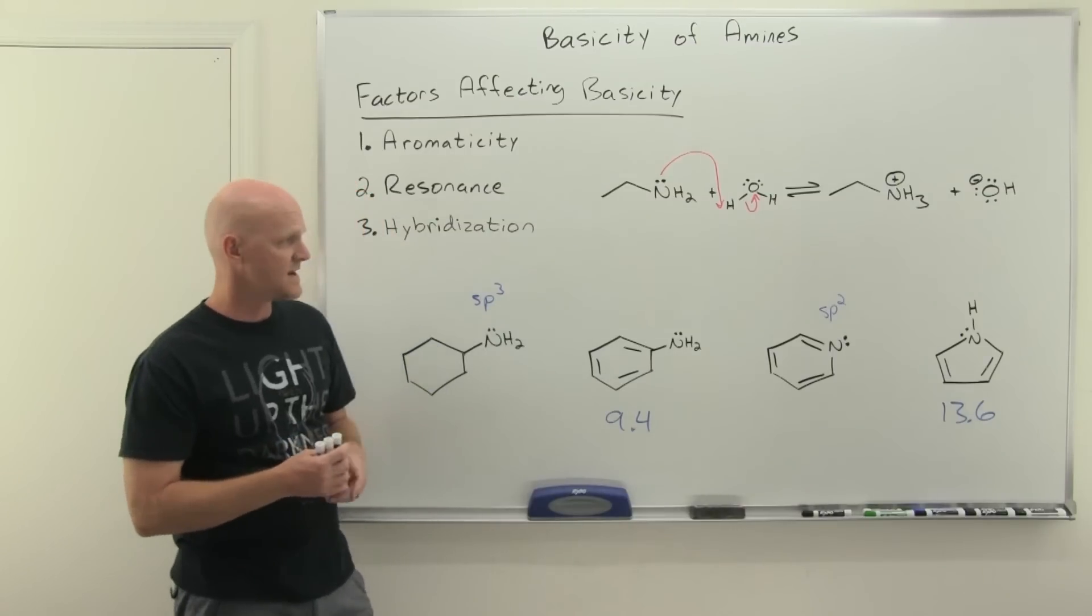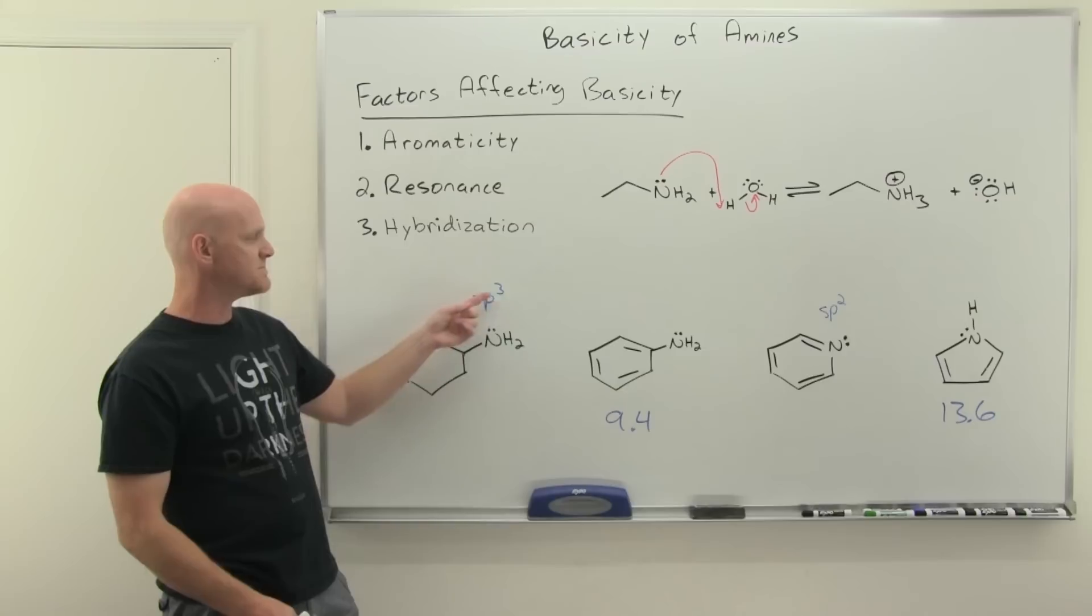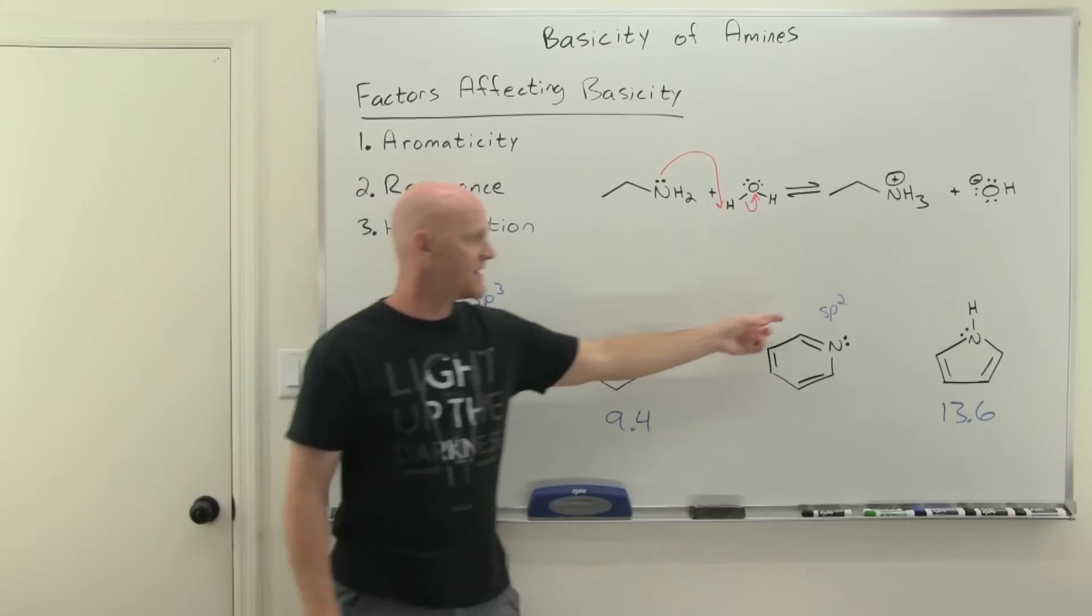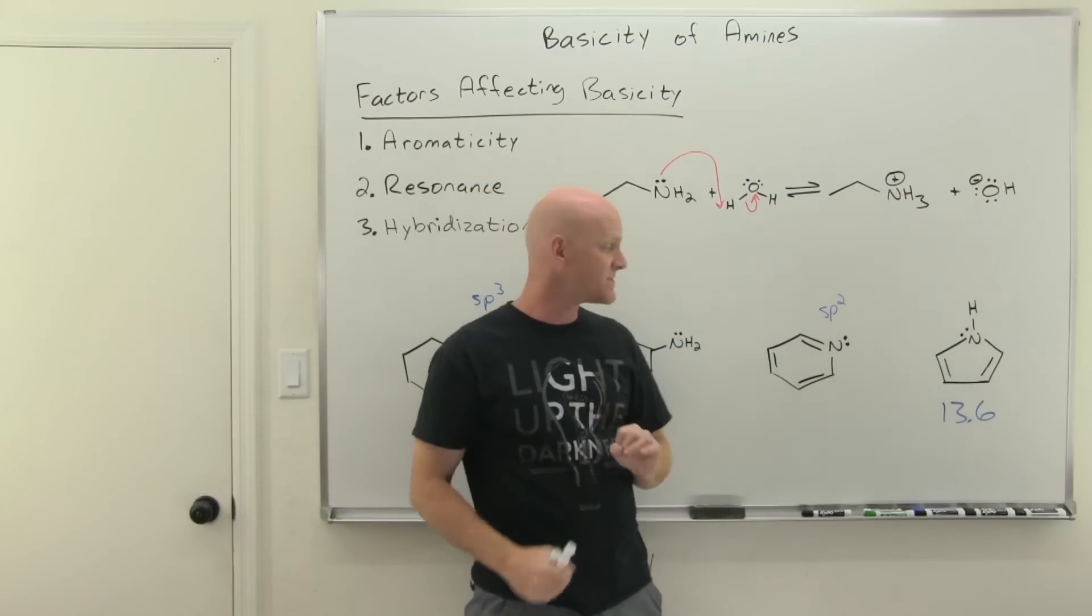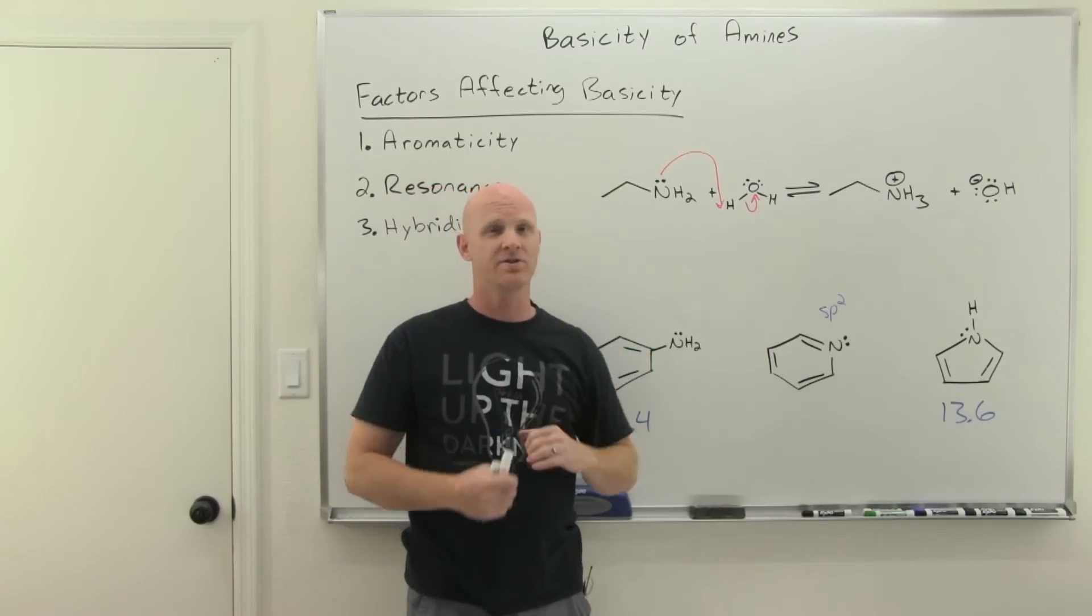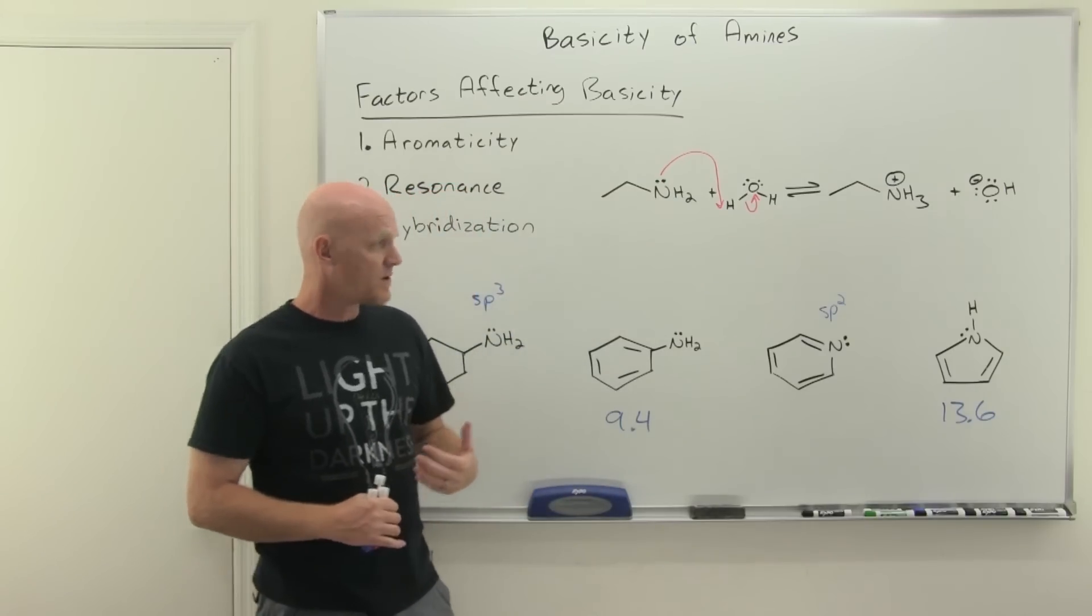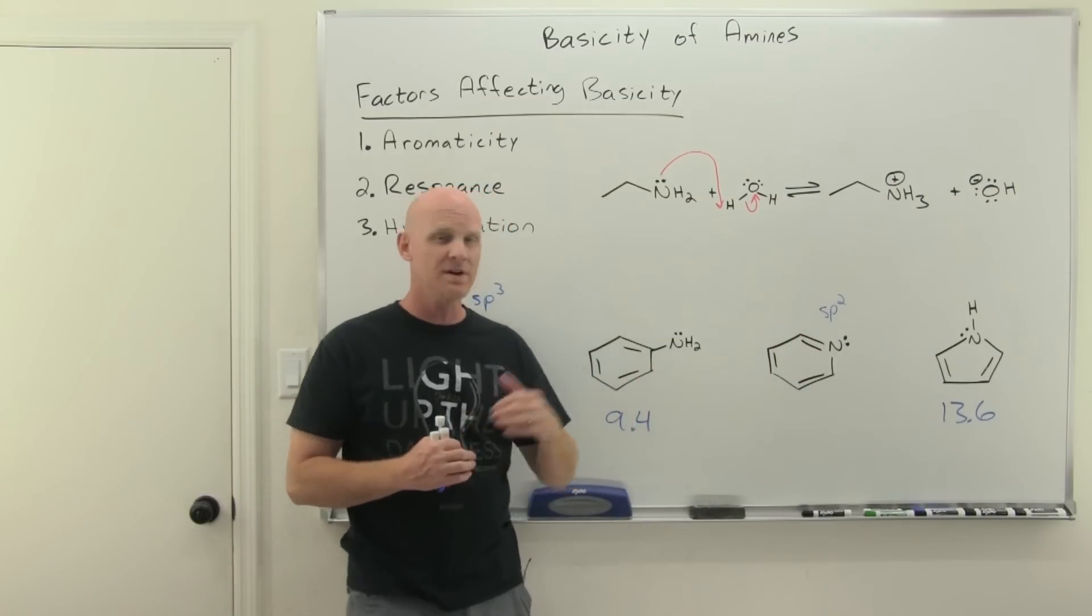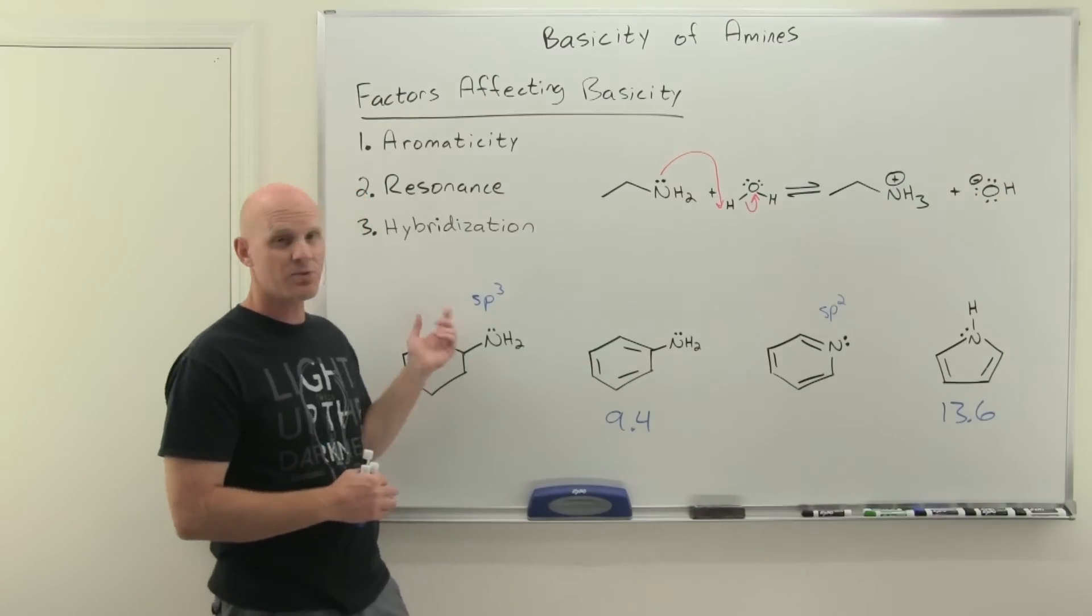So the way it works is that it's going to be lower energy, the greater the s character. So here sp3 hybrid orbitals are one part s, three parts p, they're 25% s. In an sp2, that hybrid orbital is one part s, two parts p, so it's 33% s character. If you went to an sp hybrid orbital, it's one part s, one part p, it'd be 50% s character. And the greater the s character, the lower the energy. You might recall that s orbitals are lower in energy than p, because on average, they lie closer to the nucleus. An sp2 lies closer on average to the nucleus than an sp3.